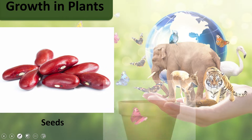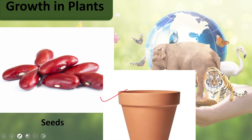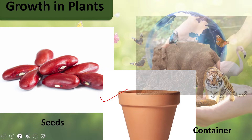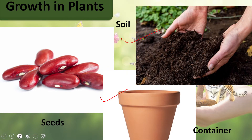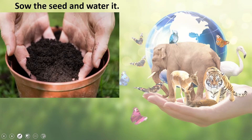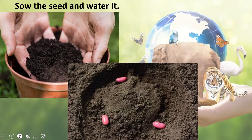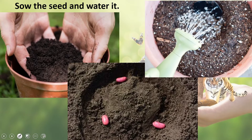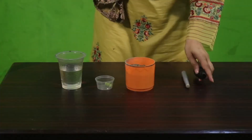For the growth-in-plants activity, you need some seeds of your choice, a pot, soil, and water. We will sow the seeds — place the seeds in the soil, cover them with more soil, then water them. I have a container, soil, and pea seeds here, so let's do this activity together.